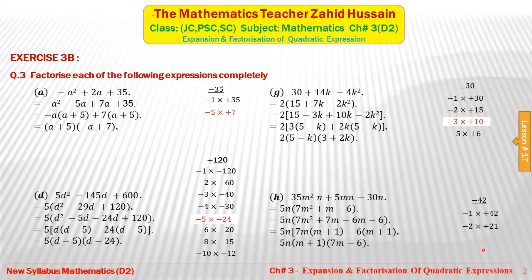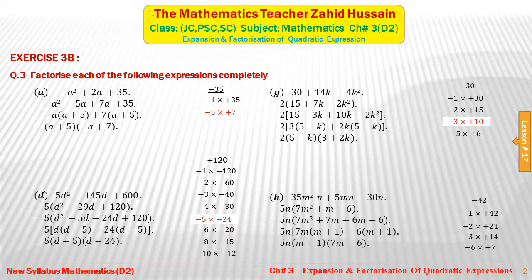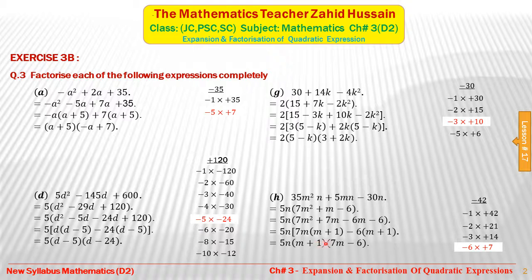We break the middle term: 5n(7m² plus 7m minus 6m minus 6). From the first two terms, 7m is common, leaving (m plus 1). From the last two terms, minus 6 is common, leaving (m plus 1). Since (m plus 1) is common in both groups, taking it out gives 5n(m plus 1)(7m minus 6). These are the complete factors of the expression.